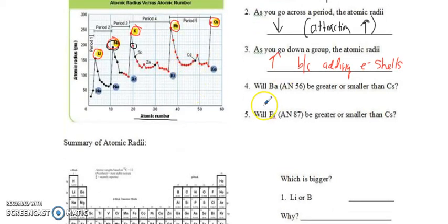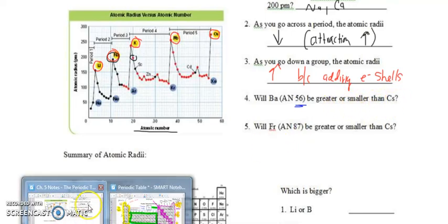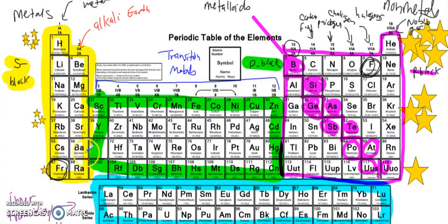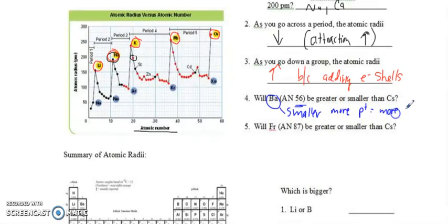Here's an analysis question: will barium, atomic number 56, be greater or smaller than cesium? Let's check our periodic table. Barium is right here, cesium is right here. They're in different columns but the same row. Which one is further to the right? Barium. Barium has more protons, which means more attraction — the nucleus will pull in that electron cloud closer and shrink the size of the atom. So barium is going to be smaller because there are more protons and that means greater attraction.